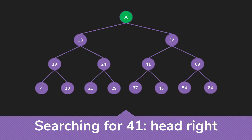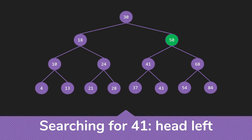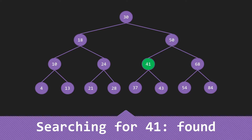One example: searching for 41. 30 is smaller than 41, so I'm going to head right. Then I look at the 50 — 41 is smaller than 50, so I need to go left. At this point, 41 equals 41. I have found what I was looking for.